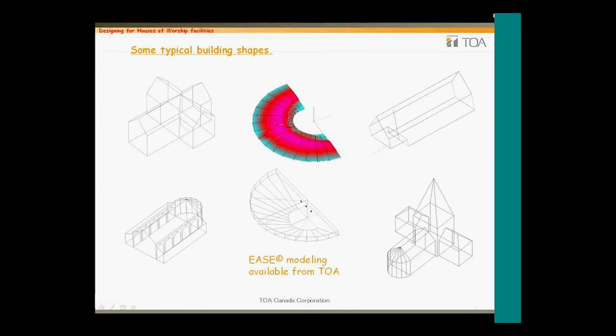Here are some examples of the different building styles often used for houses of worship. We are also seeing a trend in gymnasium multipurpose types of rooms that can be used for religious as well as youth sports activities. One service that TOA Canada can provide is EASE Modeling — Enhanced Acoustic Simulation for Engineers — which will take the guesswork out of speaker placement, energy requirements, and intelligibility. Shown is a typical direct energy rendering for three HX5s in a left, center, and right arrangement. We can also work with AutoCAD drawings to dimension facilities and locate speaker placements.